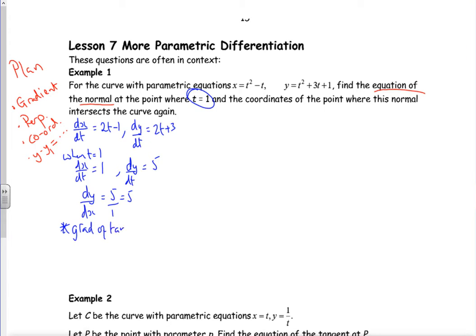That's your gradient of your tangent when t is 1. Remember AQA, because it wants the perpendicular, AQA like you writing this down using m1 m2 equals minus 1. So that means that my gradient of my perpendicular is minus 1 over 5, perpendicular.